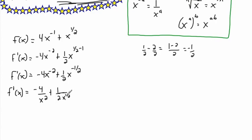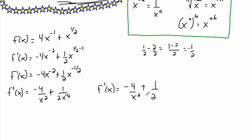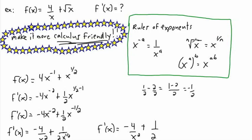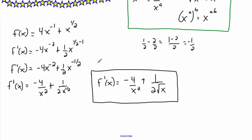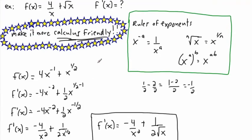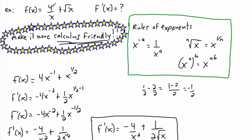Finally, just to make it even prettier, we can rewrite x to the power of 1/2 — using our rule from before — as the square root of x. So I'm just going backwards and rewriting it in root notation. This is the equation for my derivative at any point. What this is asking is: if we want to know the slope of the tangent of this graph at any point, that's what this gives us.